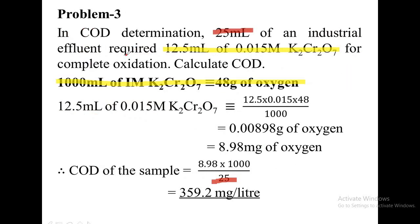Moving on to the third type. Problem 2 and problem 3 are very similar. The only difference is that instead of normality, the data will be provided in molarity. Here also, you don't have normality of FAS, no blank titration value, no back titration, no unreacted potassium dichromate — no such information is provided. Only dichromate data will be provided in molarity.